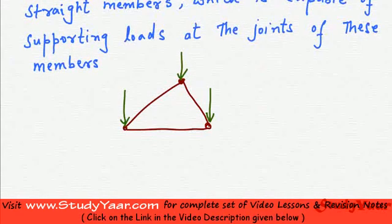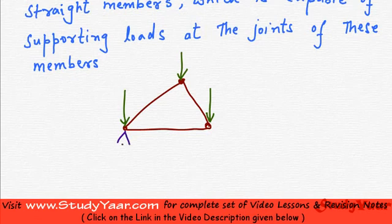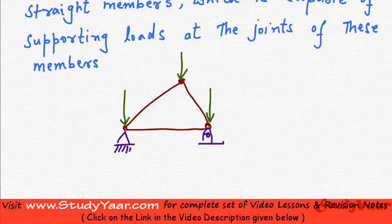If we were to support it on a knife edge support and on a hinge, this is what a truss is going to look like. Let us analyze a particular member of this truss. By the way, just understand that these members could be rods, could be beams, could be anything.